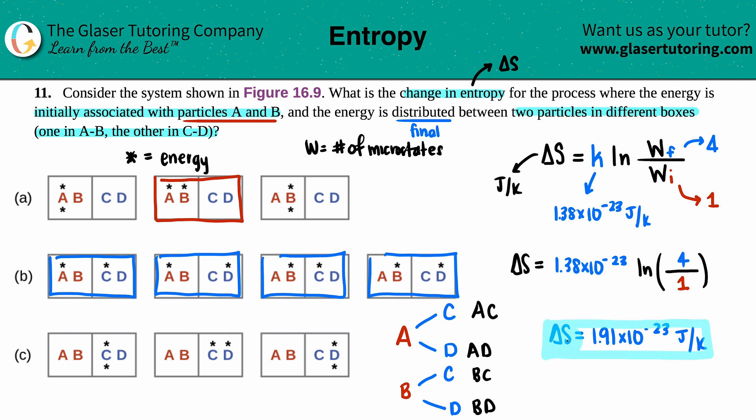And it's a positive delta S. Anytime that you have a positive change in entropy, that means that you're going to more randomness, more probability. It makes sense: you went from something that was only one shot to four shots, so more probability, more randomness, higher entropy.